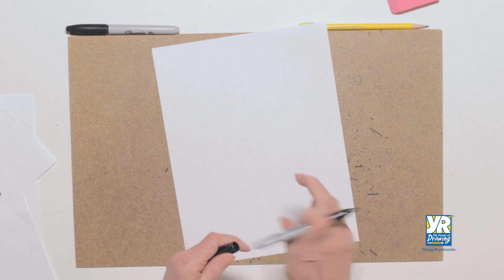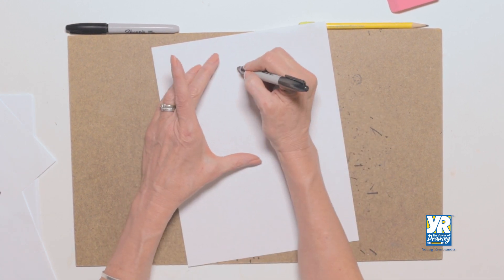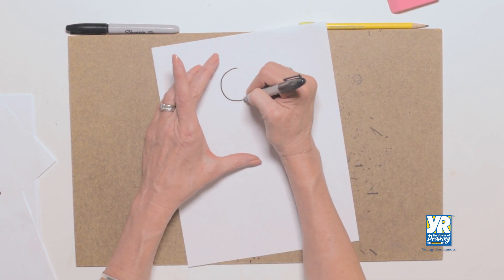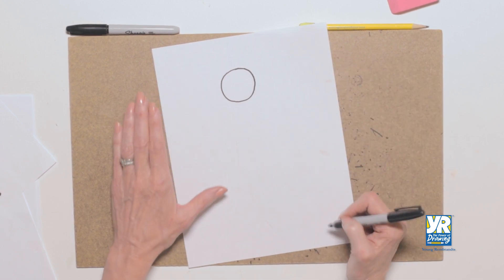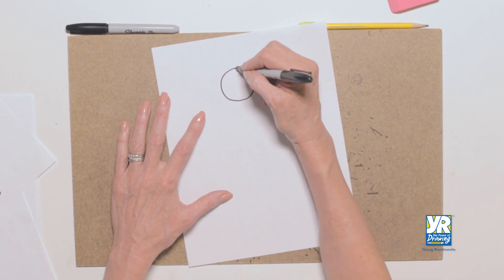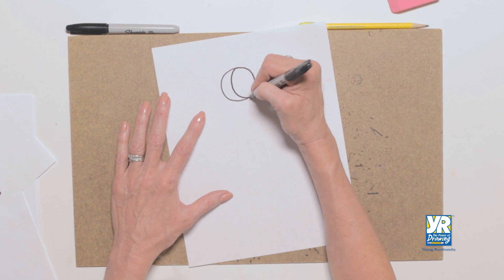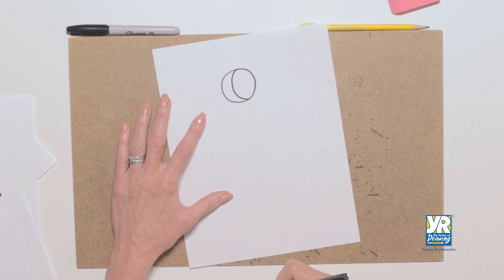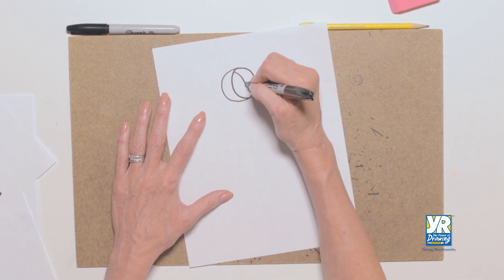We're gonna start with our center, and to do the center we're gonna draw a nice circle. Doesn't have to be perfect, just get a circle. Now we're gonna put a curved line that looks like the moon there, and we have another curved line in the middle.